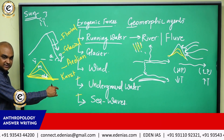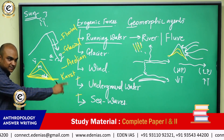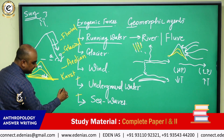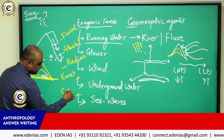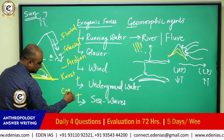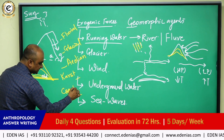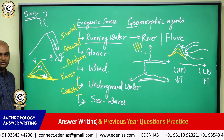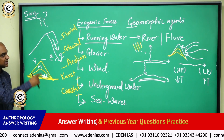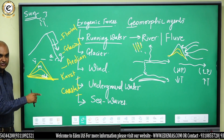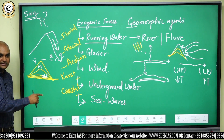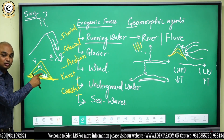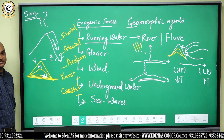The erosion caused by sea waves is known as the coastal cycle of erosion. So these are the five cycles of erosion corresponding to the five geomorphic agents.